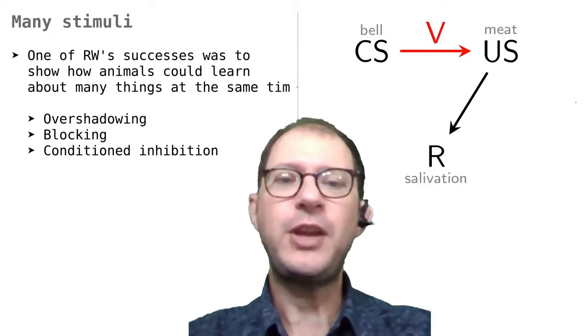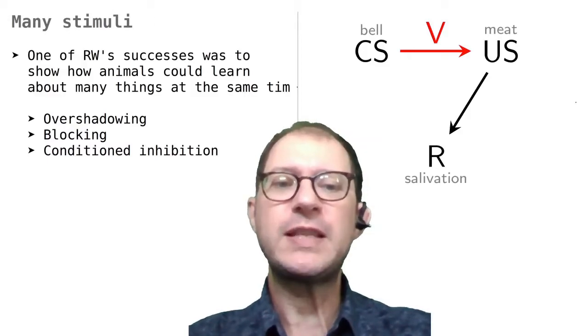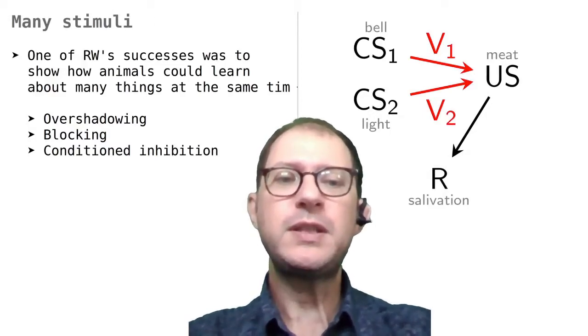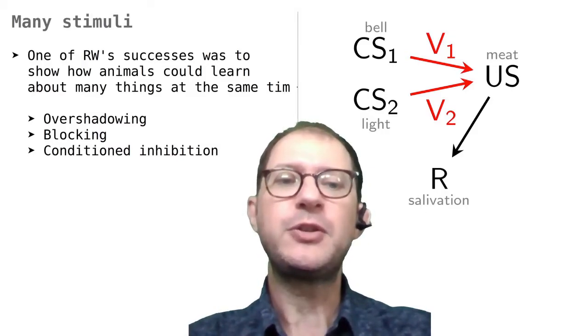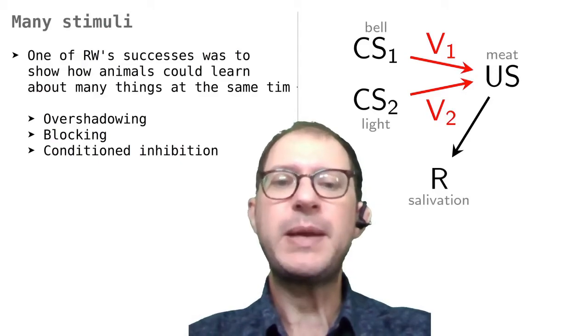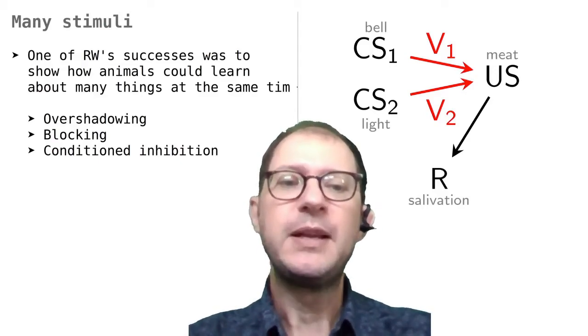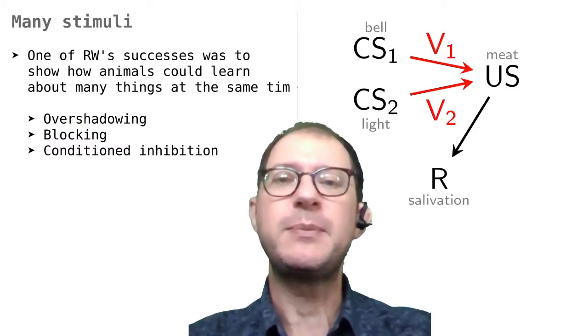RW assumes that the change in behavior that we see in Pavlovian conditioning depends on changes in the association between CS and US, in red in the figure. When we have two stimuli, we have to consider two associative strengths. For example, if Pavlov turns on a light and sounds a bell before giving meat to his dogs, we expect both the light and the bell to become associated with meat. The question is how the brain decides how much associative strength to give to each stimulus.